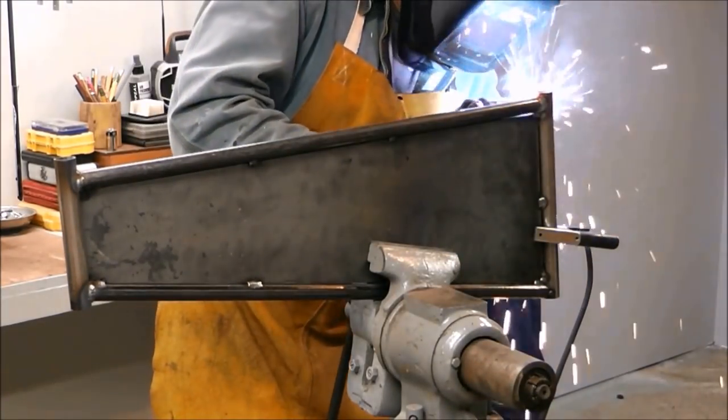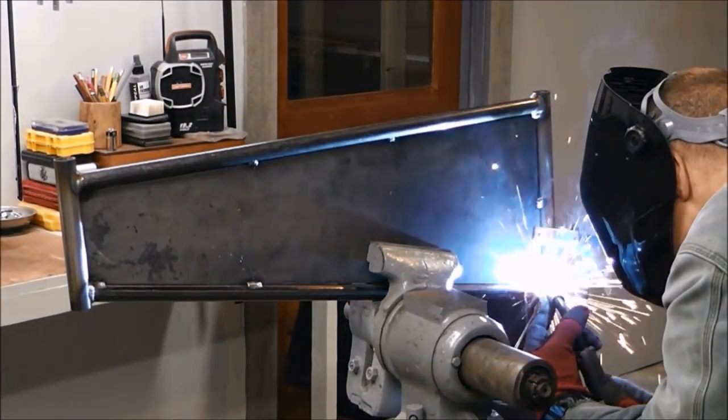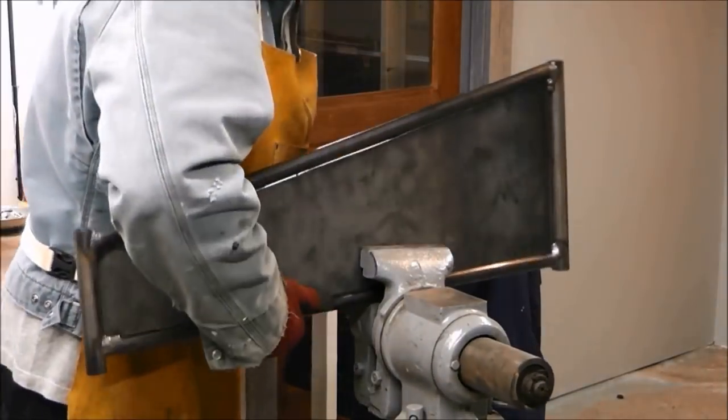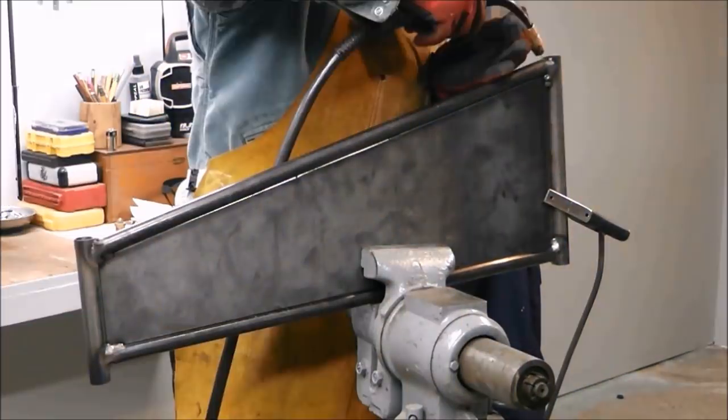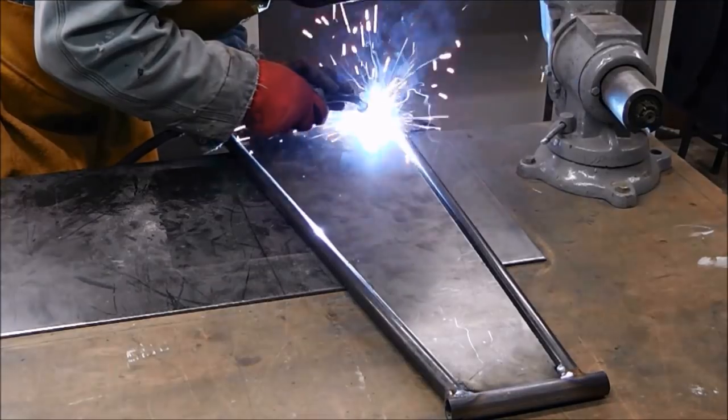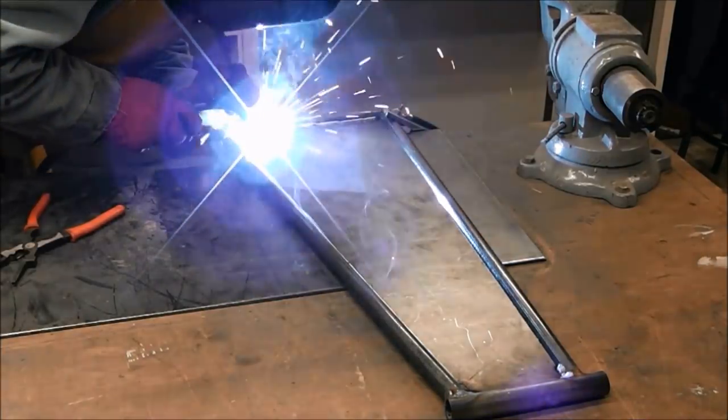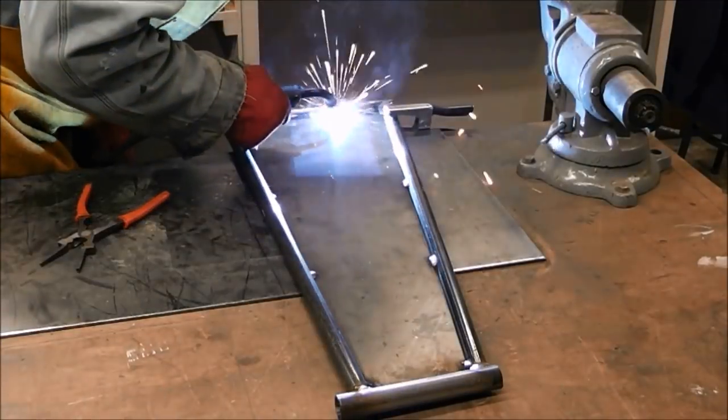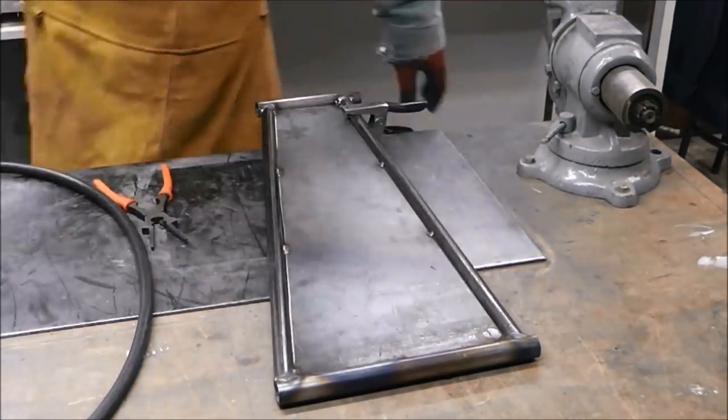So now that I got the basic shape together I'm just going to go around and do some stitch welding. I'll do full welds on the hinge side and I'll do full welds on the seat side, and that's the side I'm doing right now.